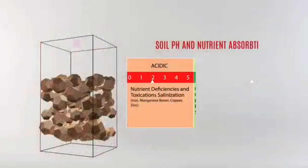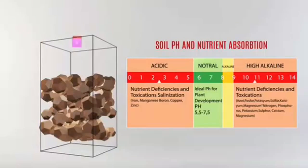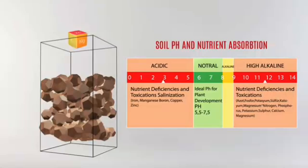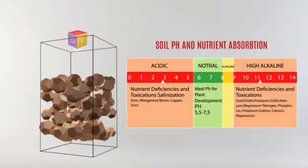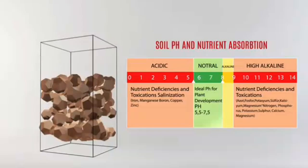Soil pH is an important parameter for plant nutrition. In high acidity, absorption of nutrients such as nitrogen, phosphorus, potassium, sulfur, and calcium diminishes. On the contrary, in high alkaline conditions, absorption of iron, manganese, boron, copper and zinc decreases. Humic acid buffers soil pH to 5.5–7.5 levels, which is ideal for plant development and nutrient absorption. Acting as a natural chelator, they help plant roots absorb nutrients more efficiently and create long-term positive effects on soil quality and productivity.